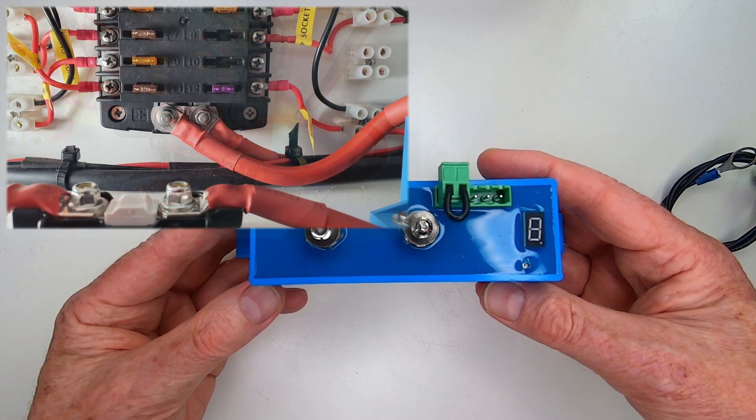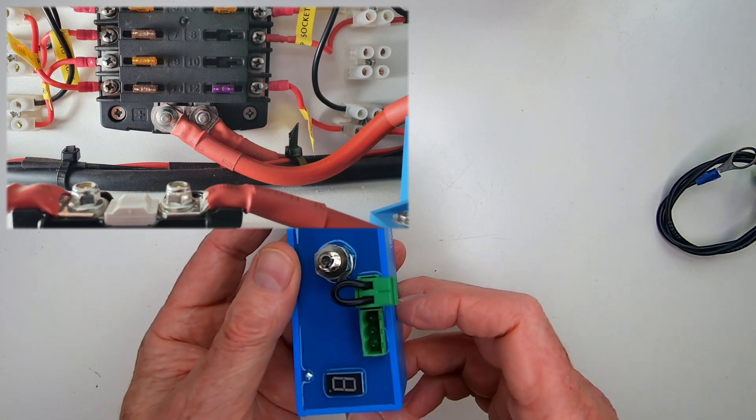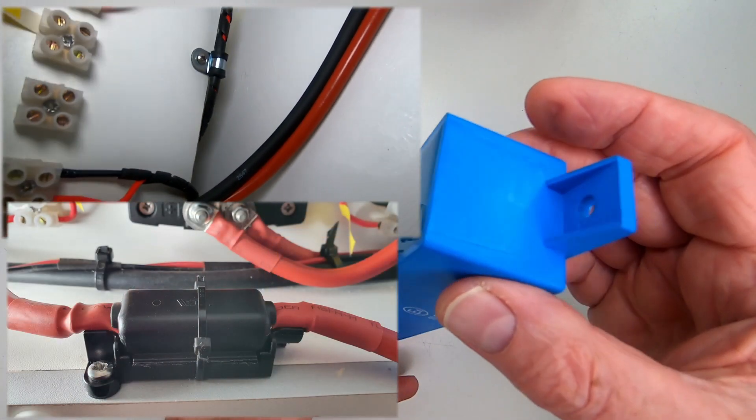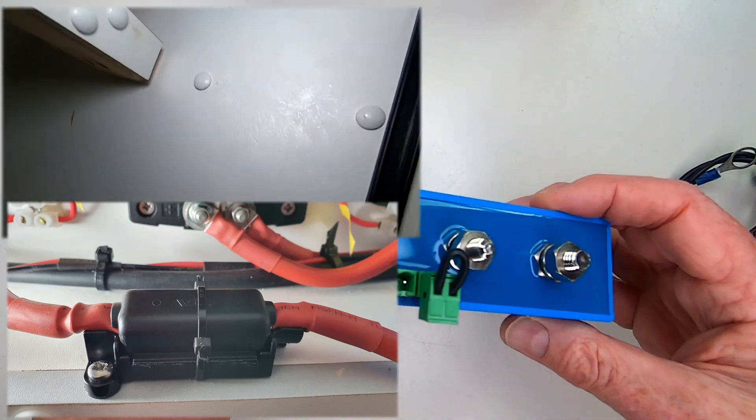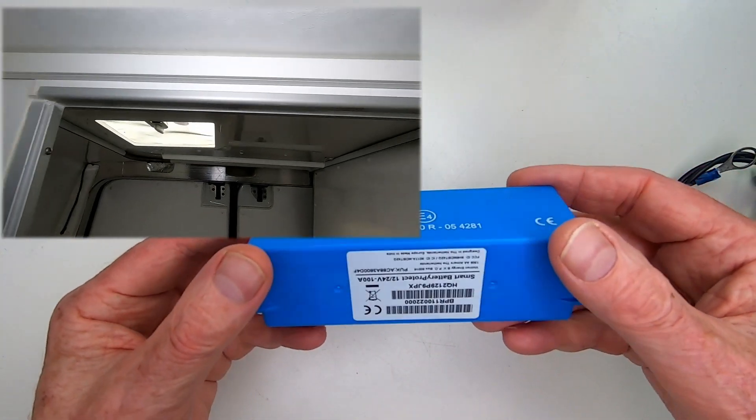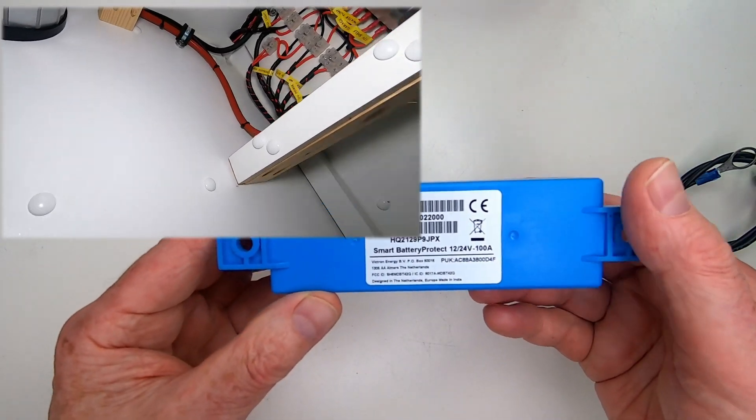From the Victron charge protect, the live cables then attach to the first of two fuse boxes. The live cable then continues across to the other side of the van to a second fuse box. Each fuse box services either side of the van.